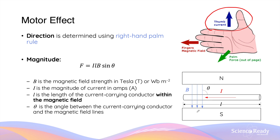If you take a look at this diagram, our conventional current is traveling to the left, so our thumb should also point towards the left. Our magnetic field goes from the north pole to the south pole, so it's going downwards, meaning our fingers will be pointing downwards. If you do this with your right hand, your palm should be facing out of the screen, and that's the direction of the force acting on this conductor.